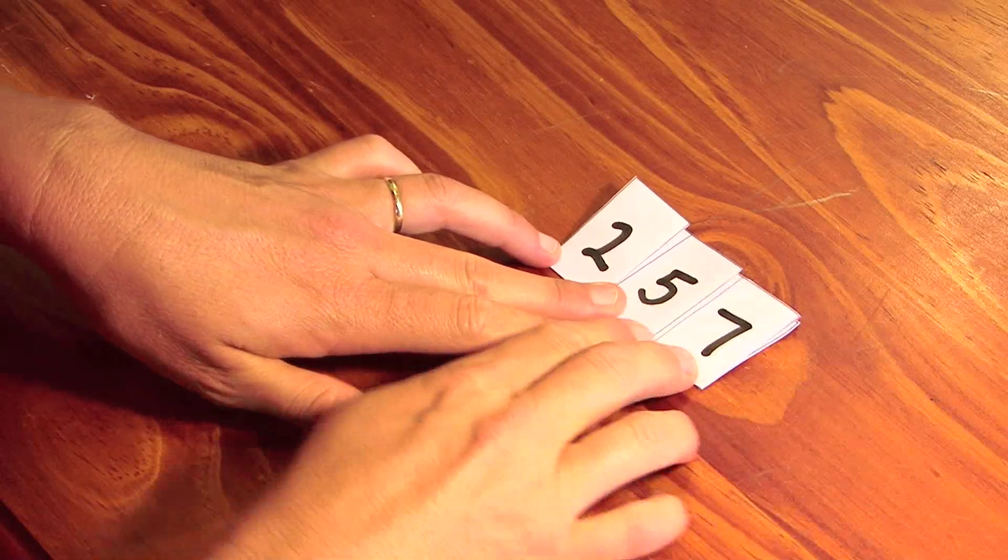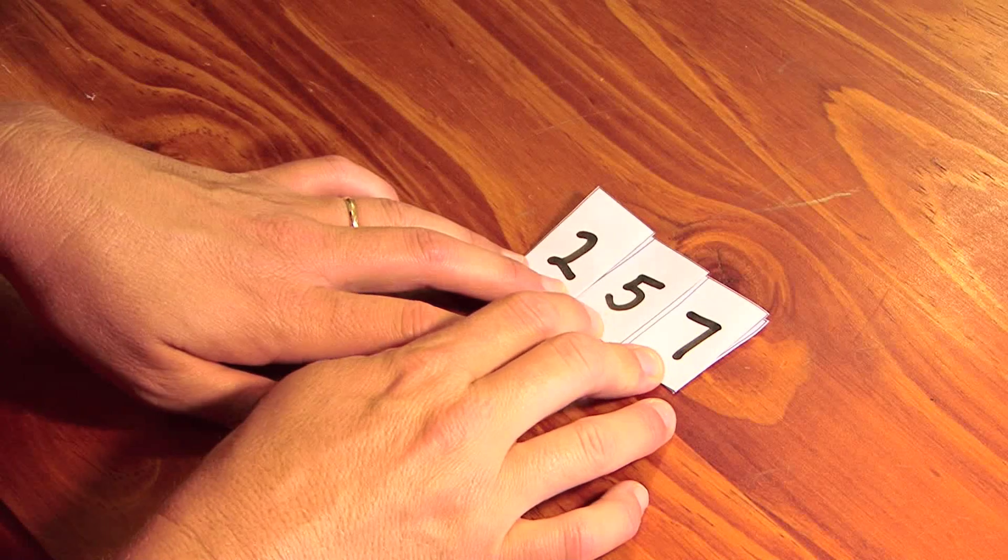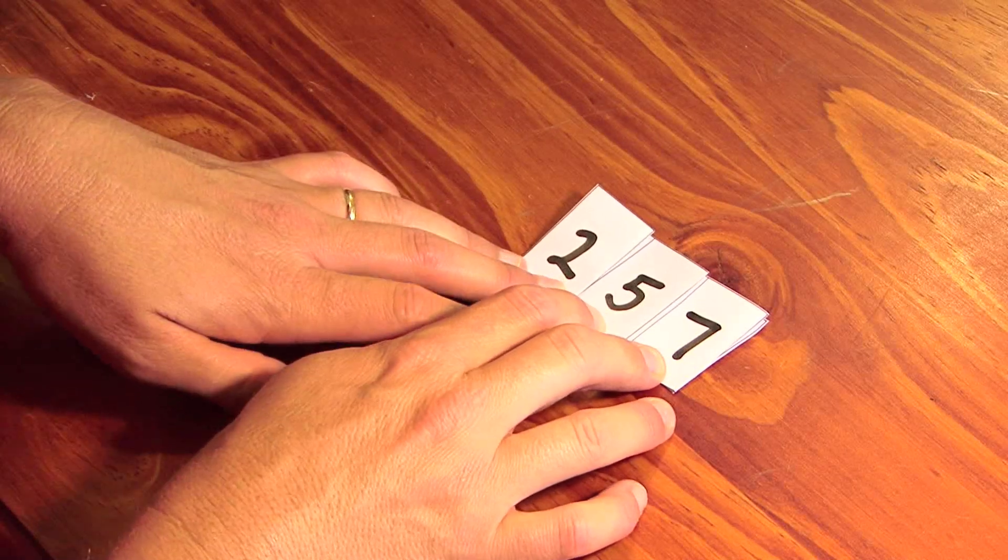The number expander is really good because it can get kids to see that 257 can be read in a number of different ways.